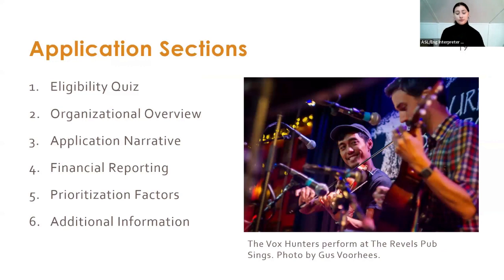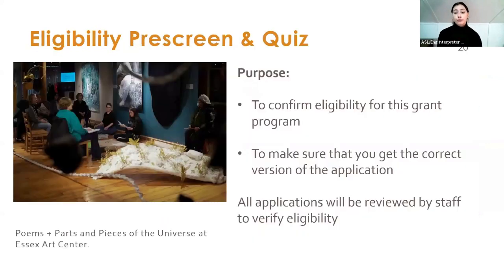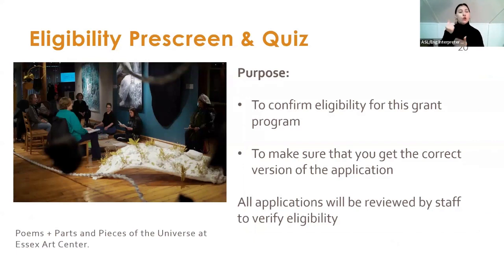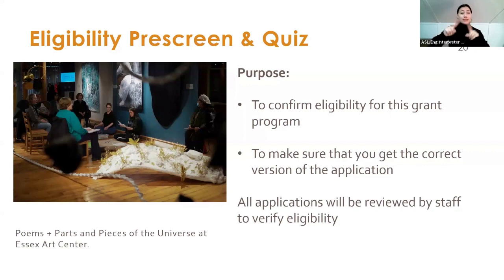The application consists of six sections: an eligibility quiz, an organizational overview, an application narrative, financial reporting, prioritization factors, and additional information. The eligibility pre-screen quiz serves two purposes: it confirms your organization is eligible, and it ensures you get the proper format of the application, since the financial reporting sections are different for cultural affiliates. For cultural affiliates, we ask a few questions about your parent organization to make sure you get the correct version.